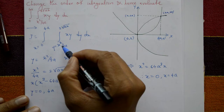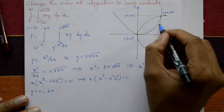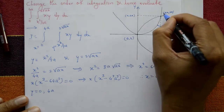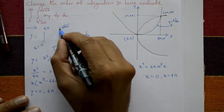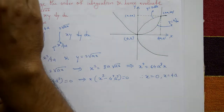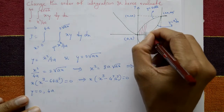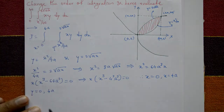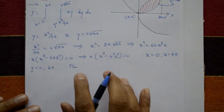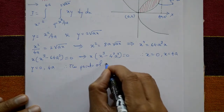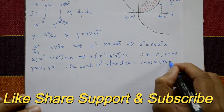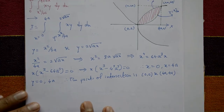The curve y equals x squared by 4a is a parabola symmetric about the y-axis. The curve y equals 2 times square root of ax is symmetric about the x-axis. The points of intersection of the two curves are (0, 0) and (4a, 4a).